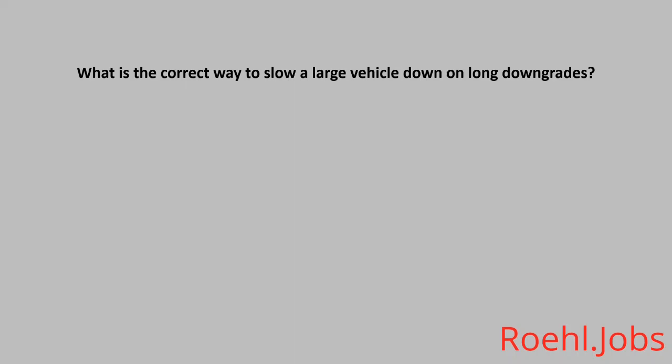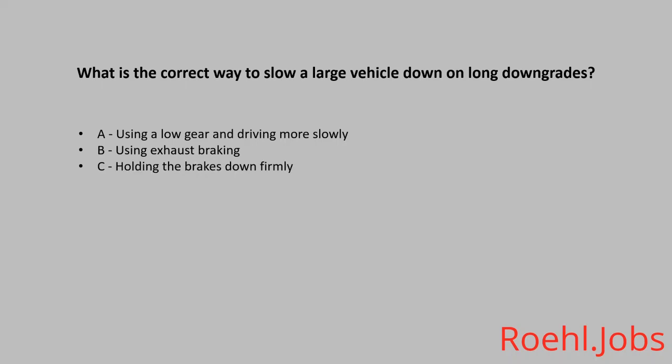What is the correct way to slow a large vehicle down on long downgrades? A. Using a low gear and driving more slowly. B. Using exhaust braking. C. Holding the brakes down firmly. D. Controlled braking. The answer: A. Using a low gear and driving more slowly.